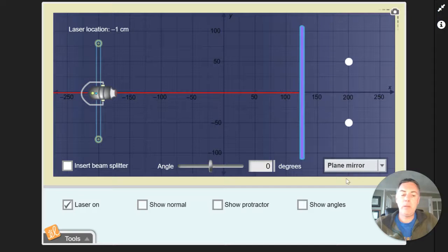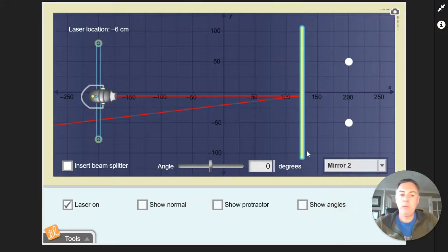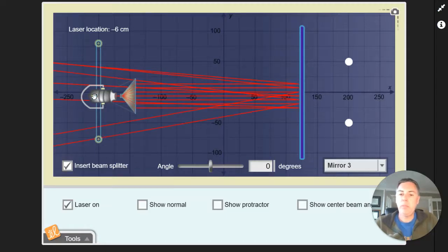We also have a few other options for the type of reflective surface. Right now it's listed as a plain mirror—that's just a flat mirror—but we have mirror number one, and so that's a little goofy, and then another one over here and another one over here.